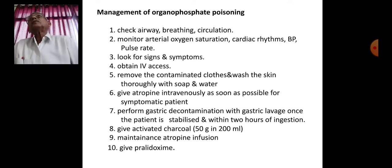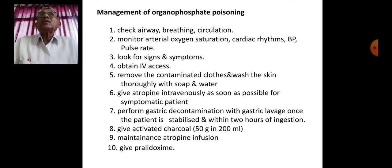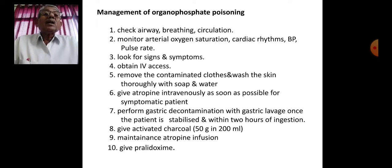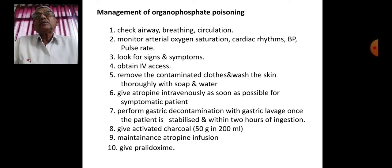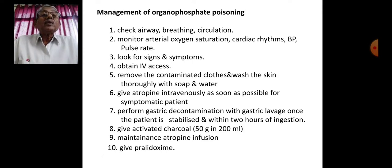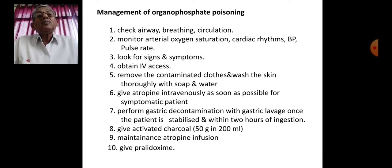For management of organophosphate poisoning, first check the airway, breathing, and circulation — pulse, blood pressure, and peripheral circulation. Monitor arterial blood gas and oxygen saturation, look for cardiac arrhythmias. Obtain IV access as soon as possible. Remove contaminated clothes and wash the skin thoroughly with soap and water to reduce further absorption through the skin.